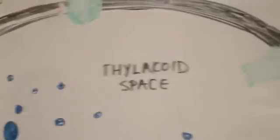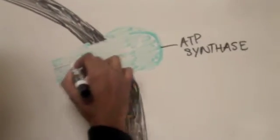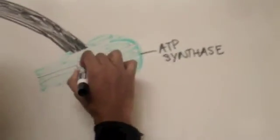A chemiosmotic gradient forms in the ATP synthase, which is actually right here. So what you have is a flow forming right there within it, and there is a transfer of the solute from the high concentration right through into a low concentration.